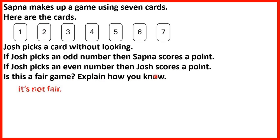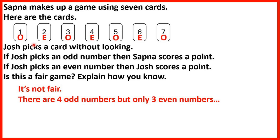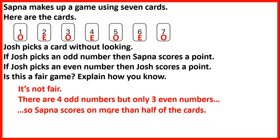It's not fair, because odd numbers end in 1, 3, 5, 7, or 9, and even numbers end in 2, 4, 6, 8, or 0. So looking at the cards, 1 is odd, 2 is even, and if we see what's even and what's odd, we can see that there are 4 odd numbers but only 3 even numbers. So Sapna scores on more than half of the cards, so it's not a fair game.